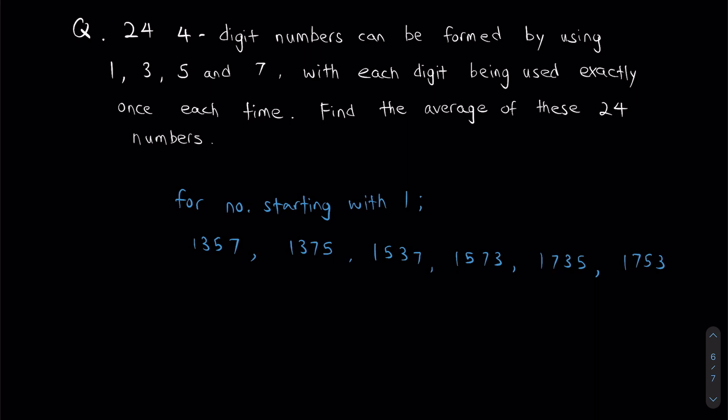Now I want us to pay attention to something. If you look at the six numbers I've written below, we realize that for the hundreds position—these positions right here—the numbers 3, 5, and 7 appear in equal amounts of times.